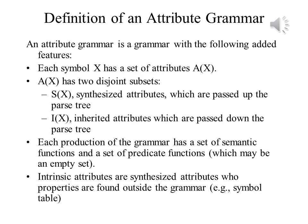Attribute Grammars have a formal definition, and it tells us that an attribute grammar is a grammar with added features. Each symbol x in the grammar has a set of attributes A(x), and that this set has two disjoint subsets: S(x), which is a set of synthesized attributes passed up the tree from son to father, and I(x), inherited attributes, which are passed down the tree from father to son. Every production in the grammar has a set of semantic functions and a set of predicate functions, either of which may be an empty set.